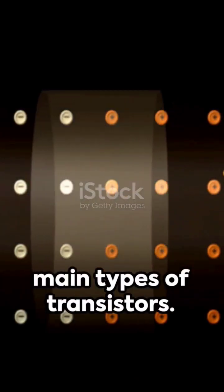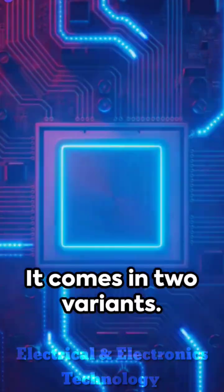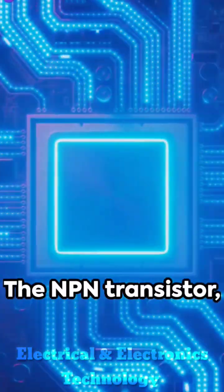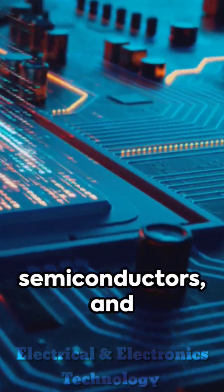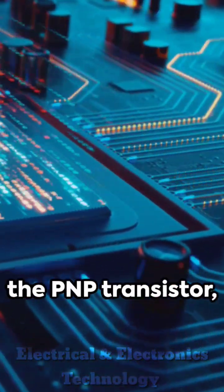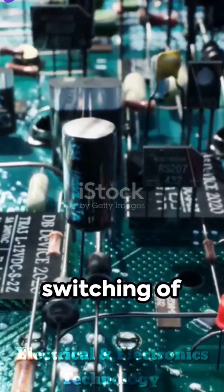Dive into the two main types of transistors. First, the BJT or bipolar junction transistor. It comes in two variants: the NPN transistor, where a thin layer of P-type semiconductor is nestled between two N-type semiconductors, and the PNP transistor, which is its opposite. Both are used for amplification and switching of electronic signals.